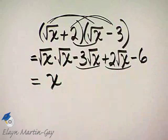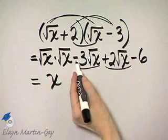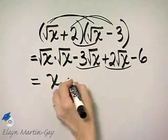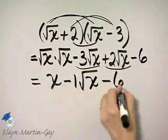And then notice here, I have like terms. I have negative 3 square root of x plus 2 square root of x. That's negative 3 plus 2 or negative 1 square root of x minus 6.